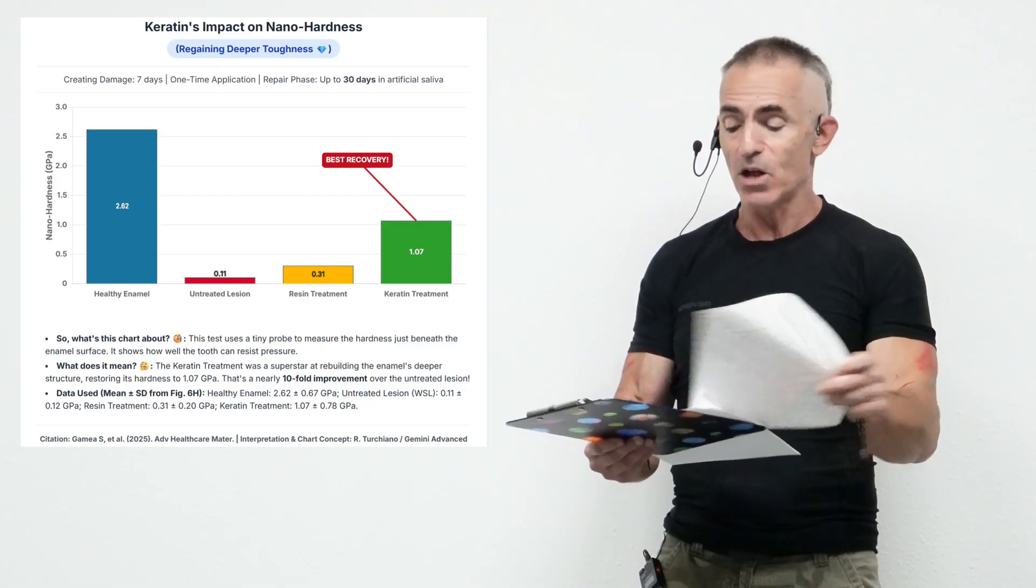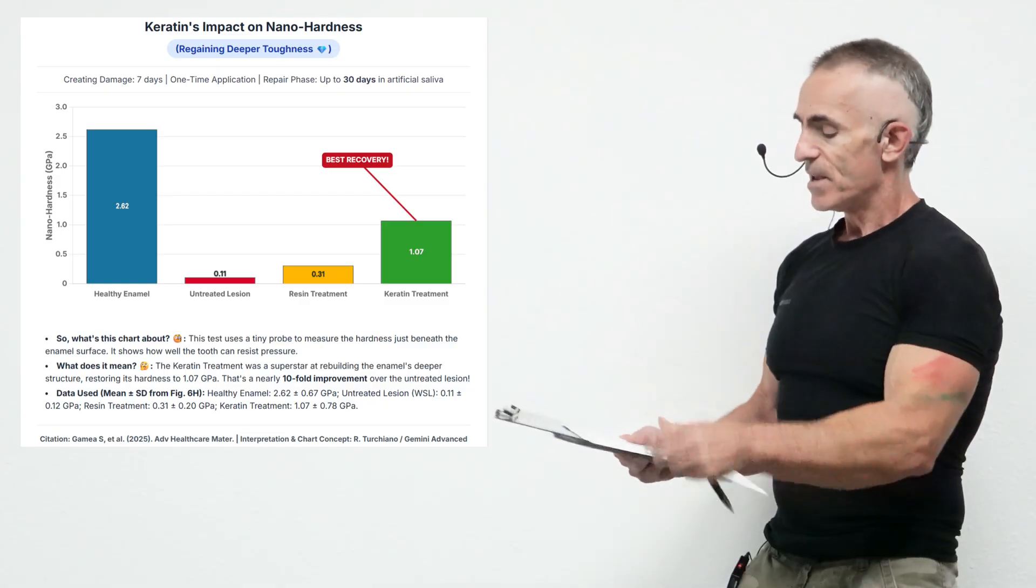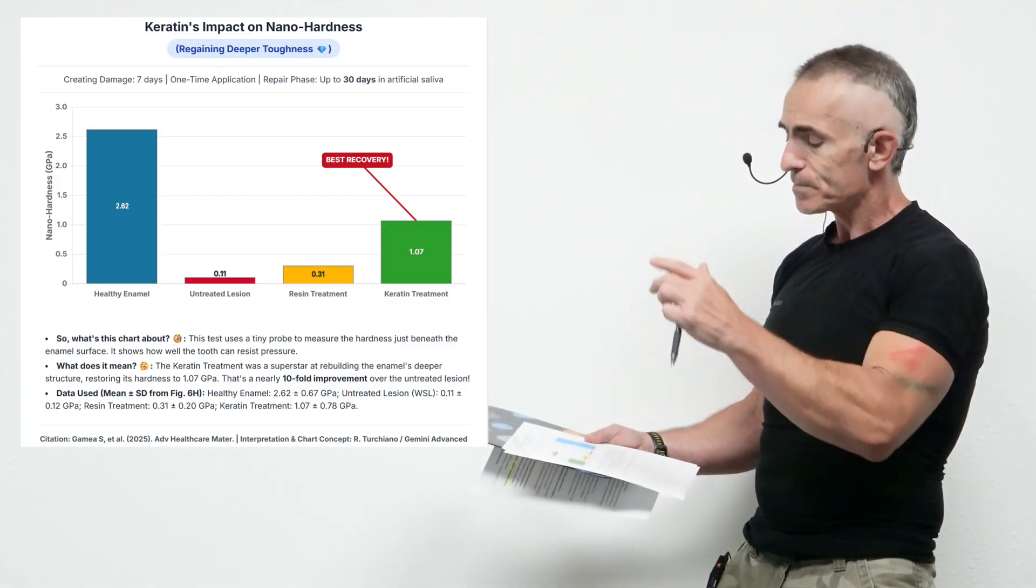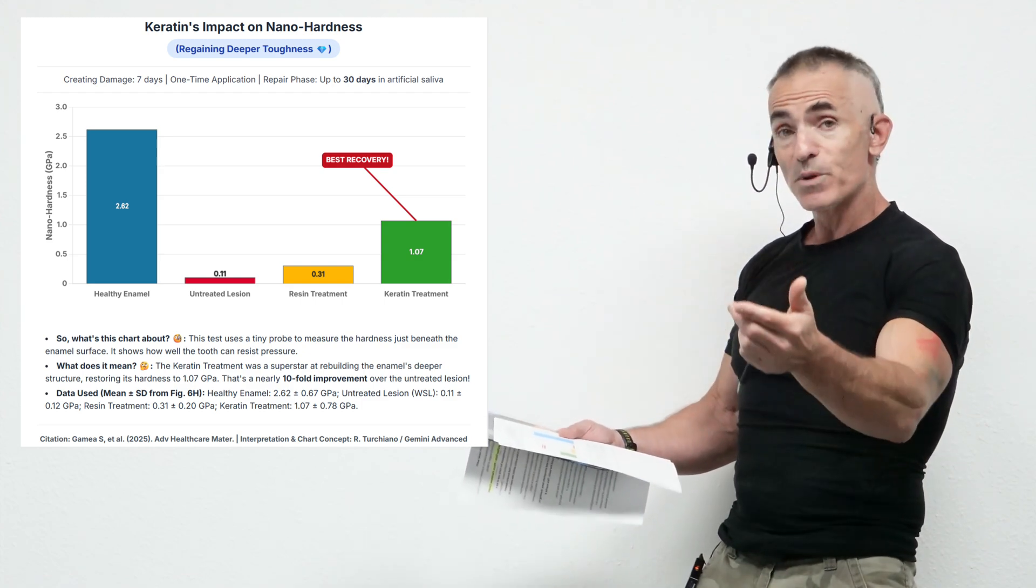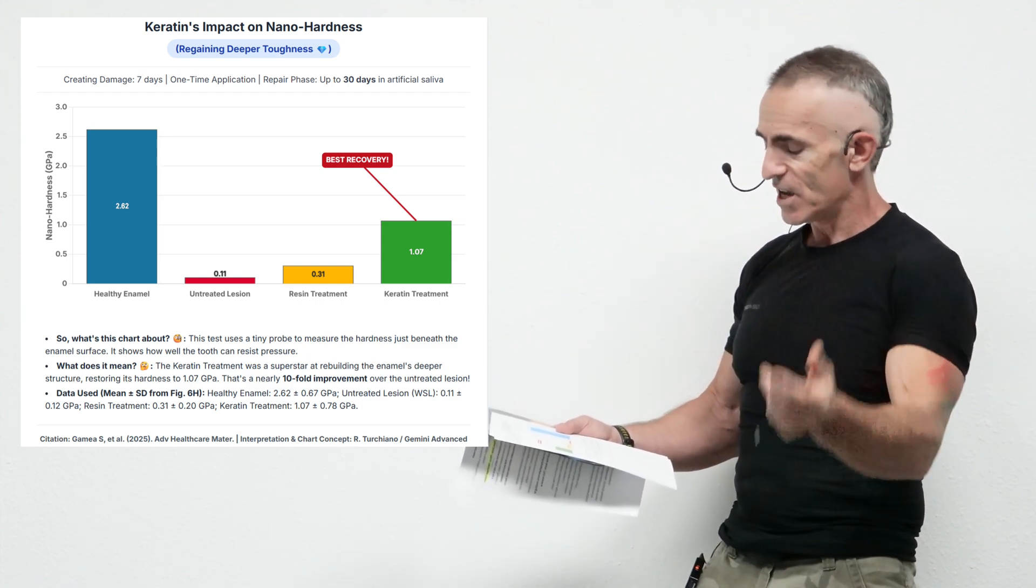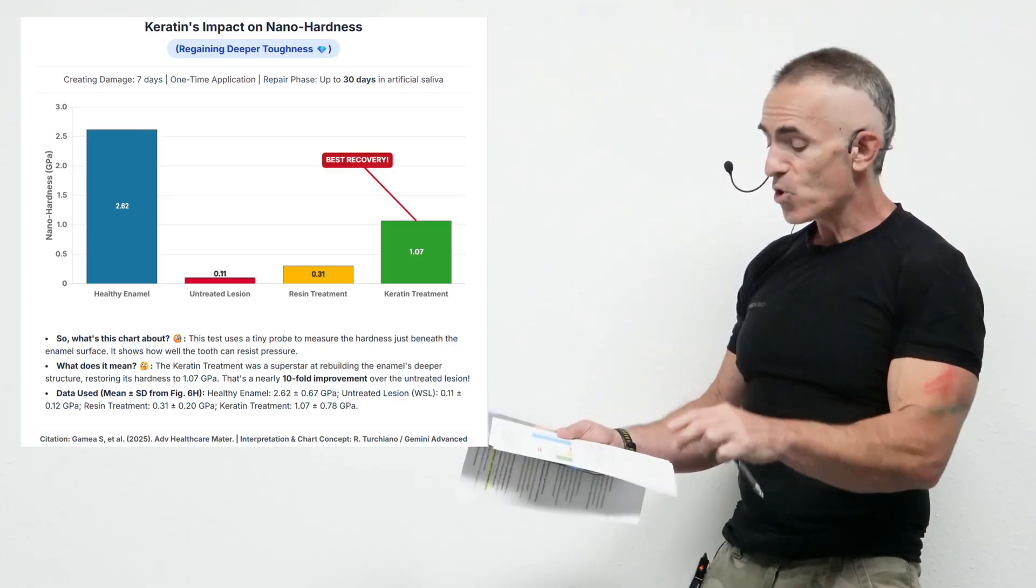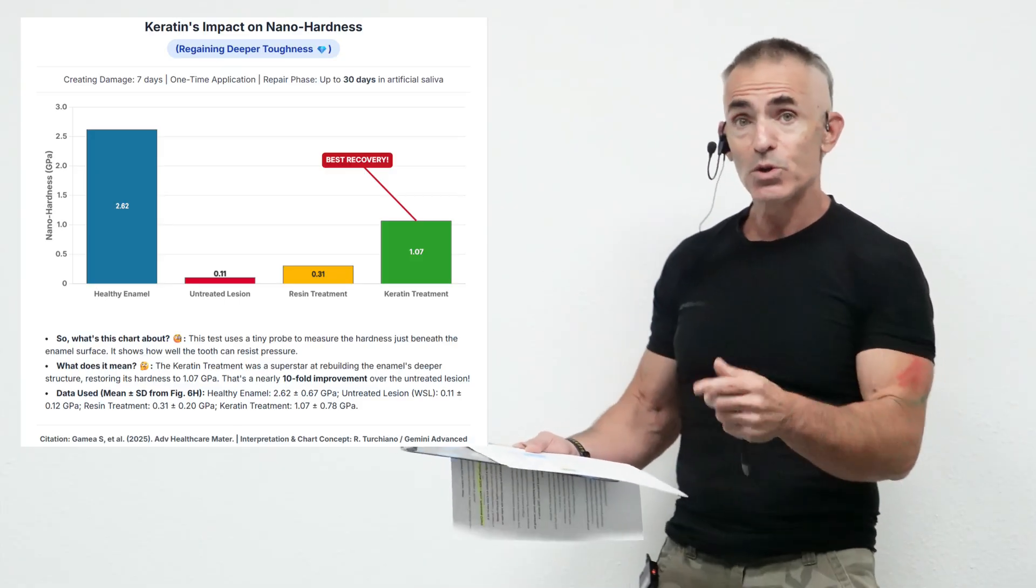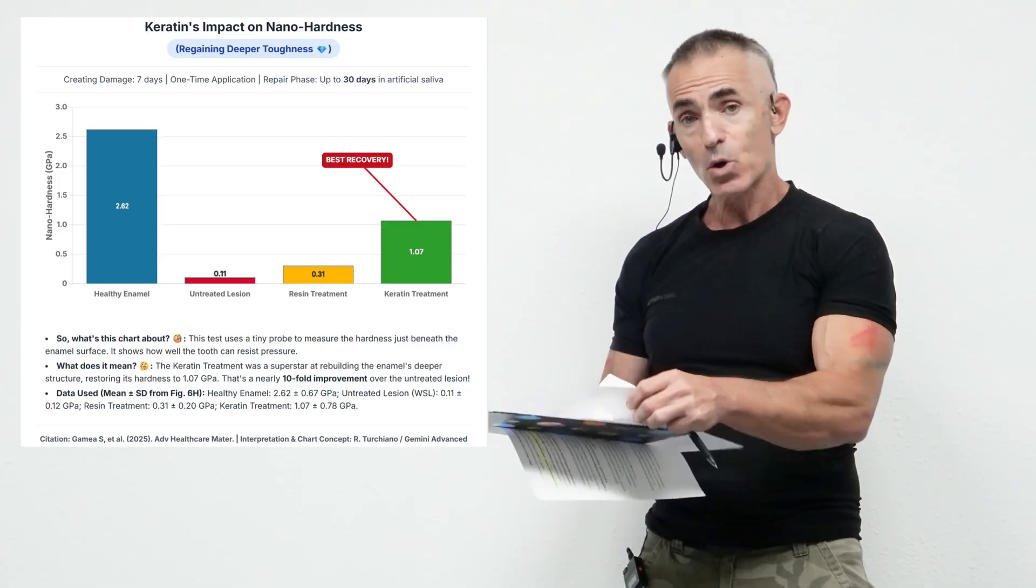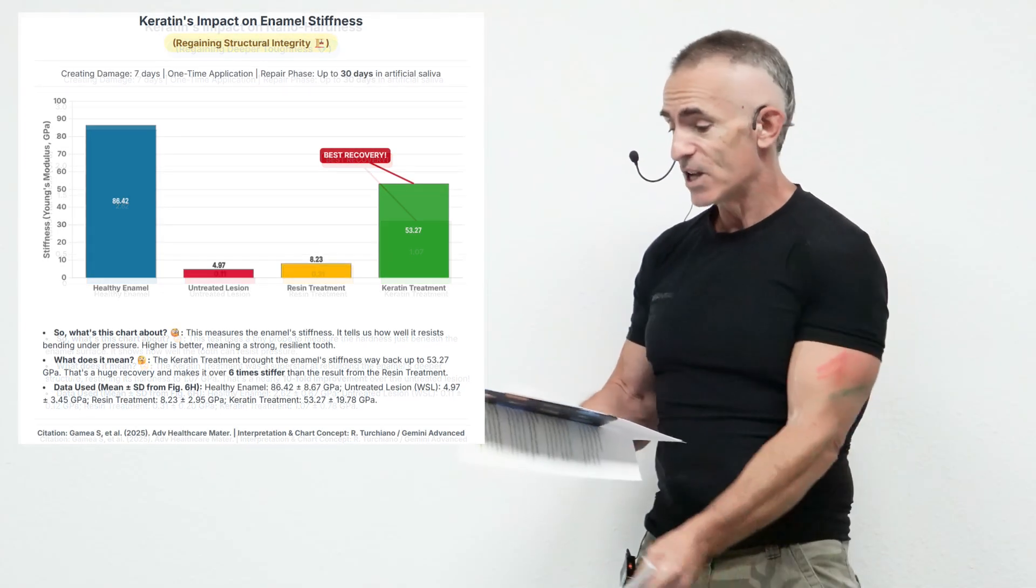Now let's look at the other charts. The impact on nano hardness, which basically shows a tenfold improvement over nothing at all. What they did here is use a tiny probe to measure the hardness beneath the enamel surface. It shows how well the tooth can resist pressure. Another amazing improvement: